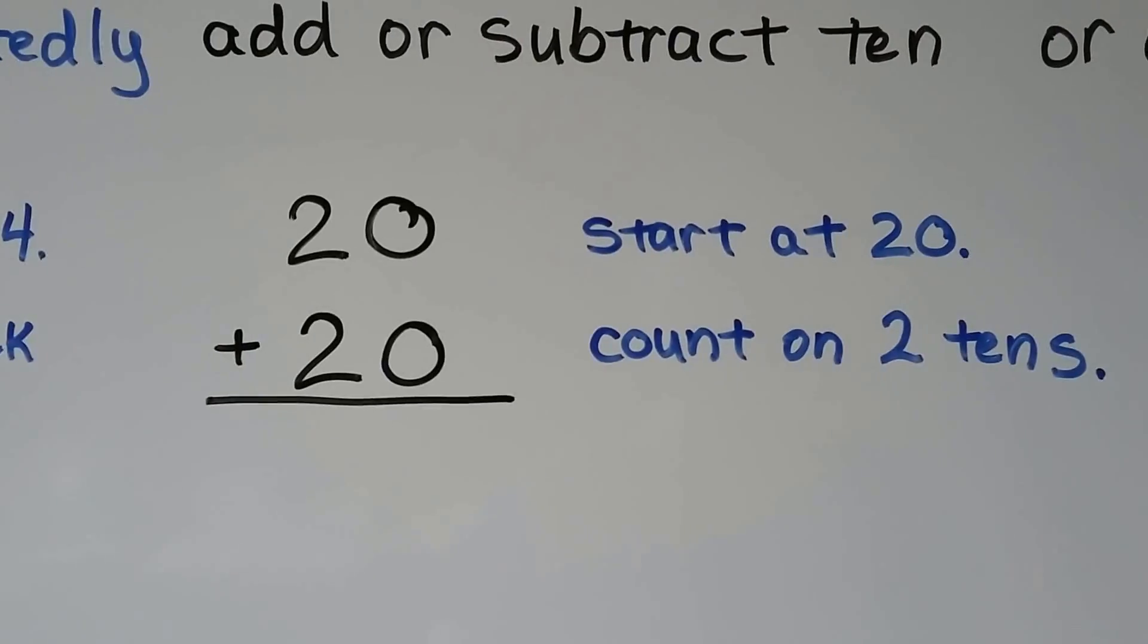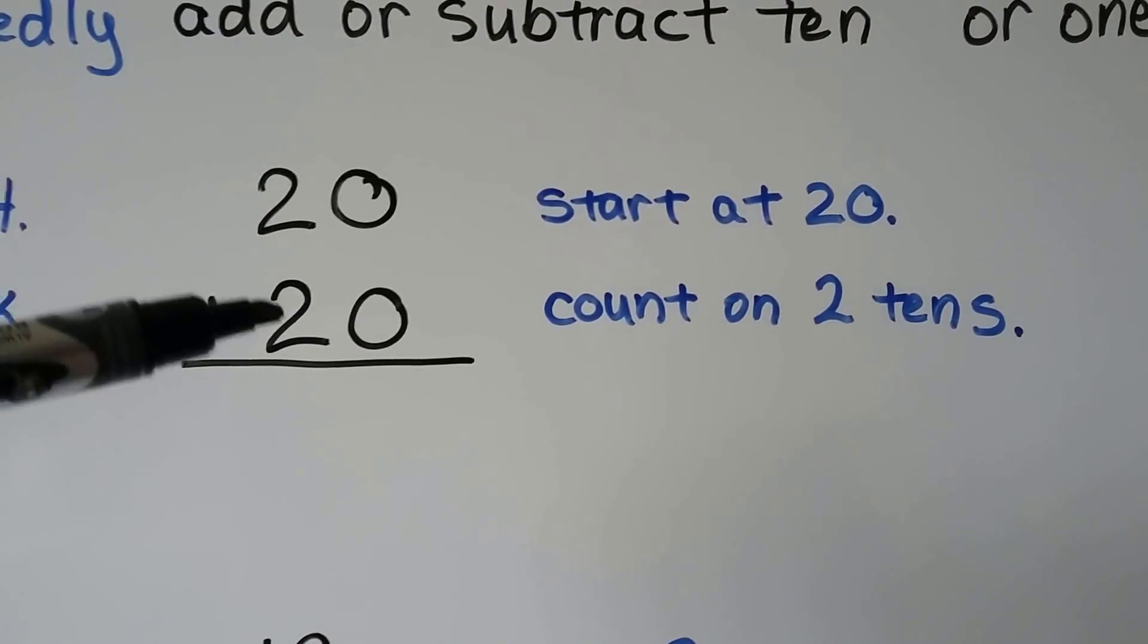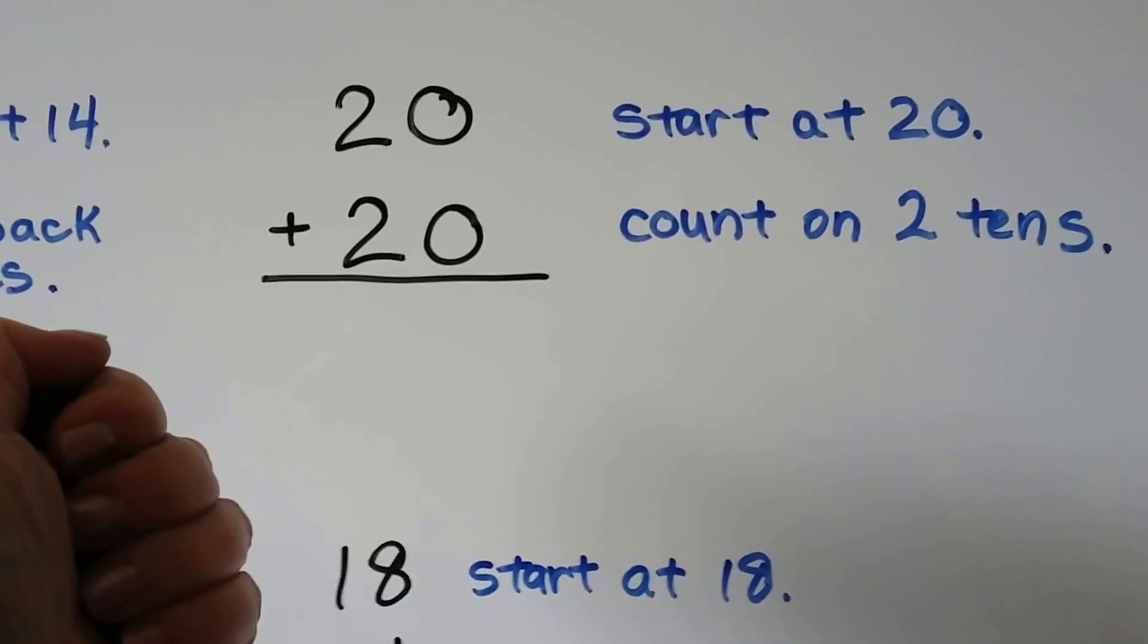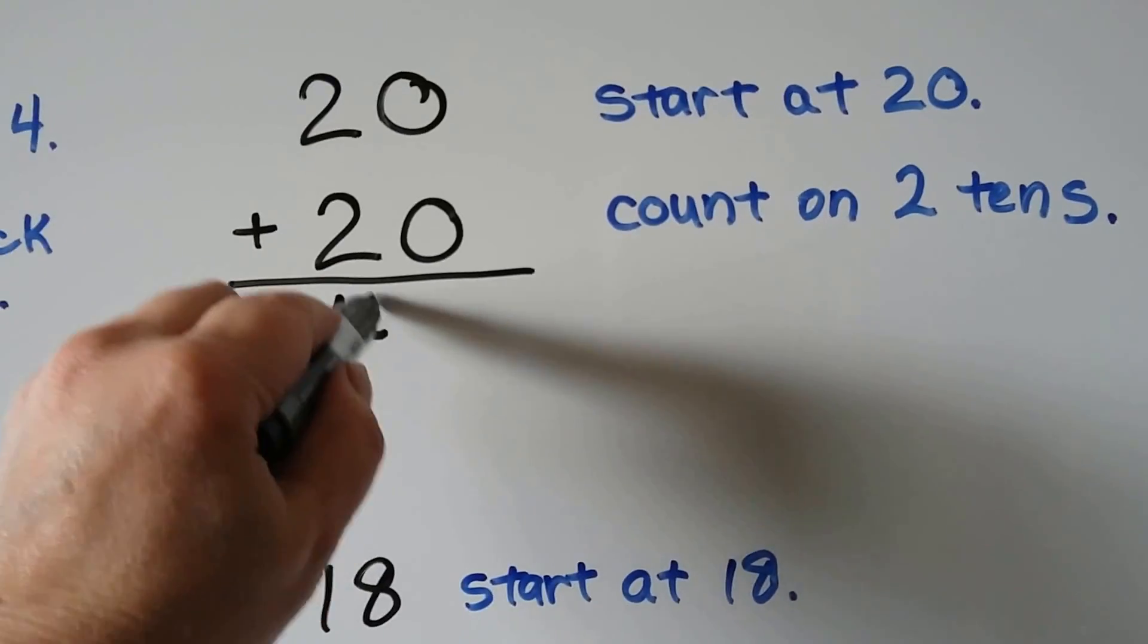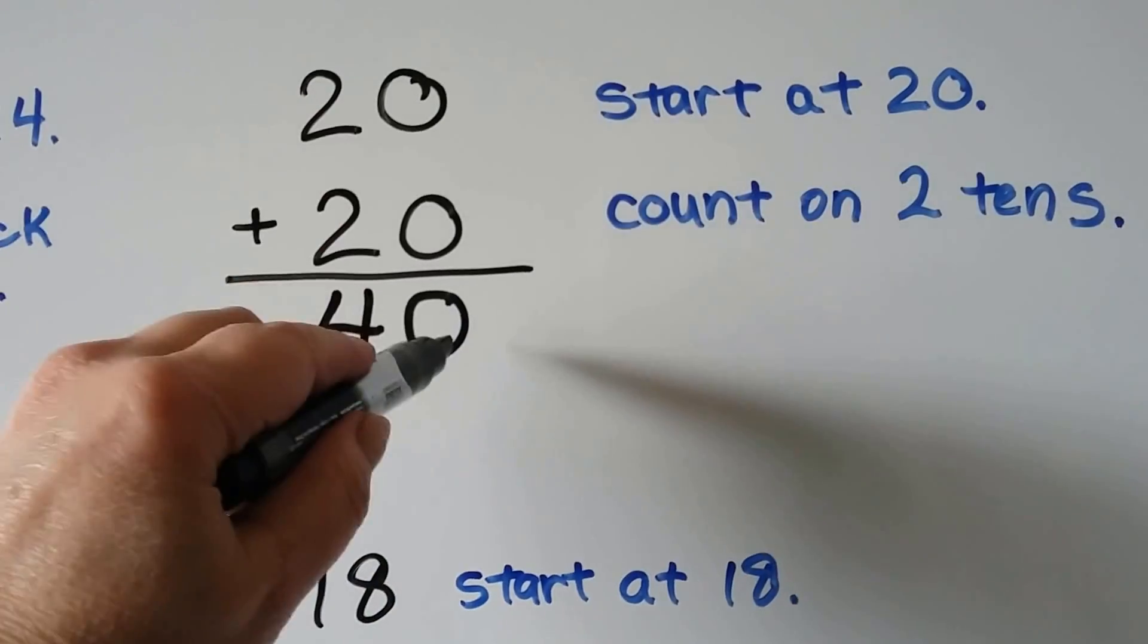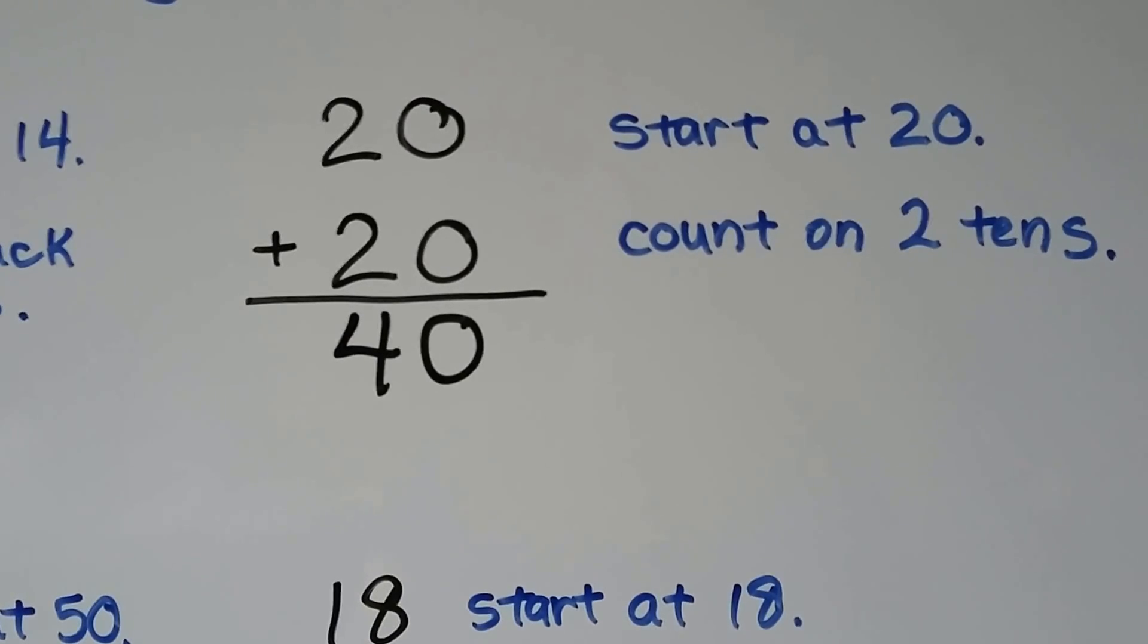We can use repeated reasoning and we can count on 10s. We start at 20 and count on 2 10s. 20, 30, 40. 2 more 10s would be 40. We have 0 in the 1s place and 2 plus 2 is 4 in the 10s place.